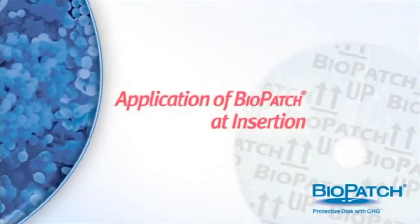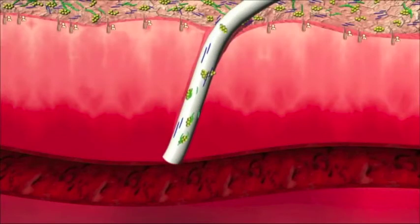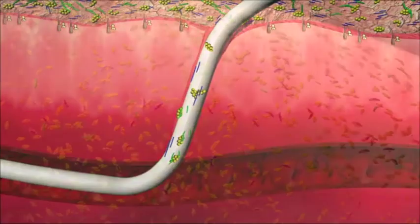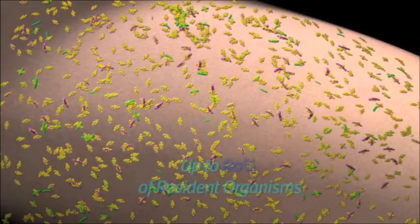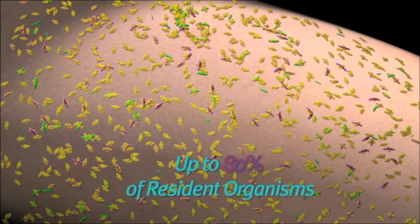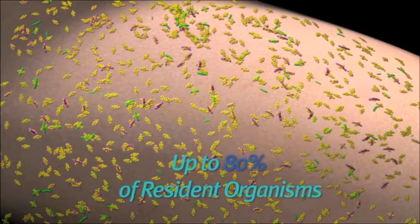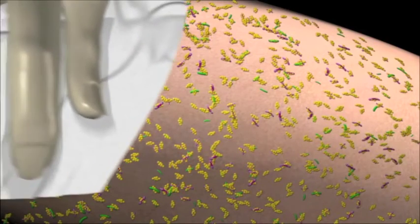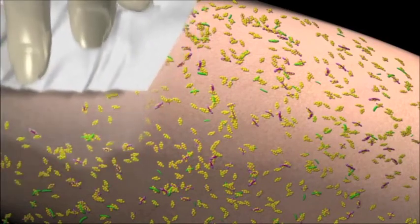When applying a BioPatch, some bacteria will invariably attach to the catheter surface as it passes through the skin layers, hair follicles, and sebaceous glands. Up to 80 percent of resident organisms in the stratum corneum can be removed by properly preparing the skin before insertion. Be sure to cleanse the skin surface according to hospital protocol.